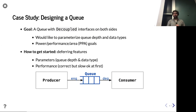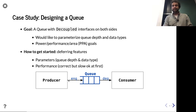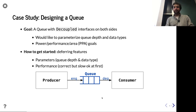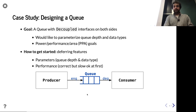Let's talk about queues. By now we're pretty familiar with queues. We're going to have two decoupled interfaces, one for enqueuing and one for dequeuing. A natural thing you might want is a parameterizable depth for our queue, as well as an arbitrary data type. You might also care about power efficiency, area efficiency, or how fast it is in terms of clock period.